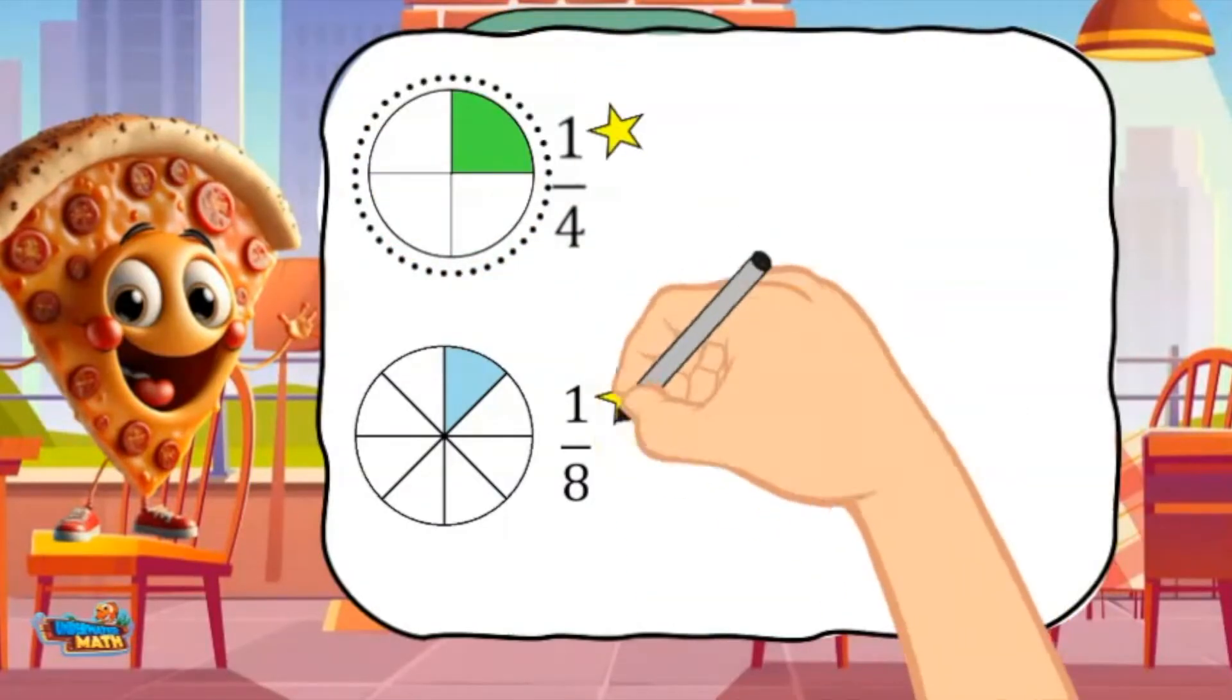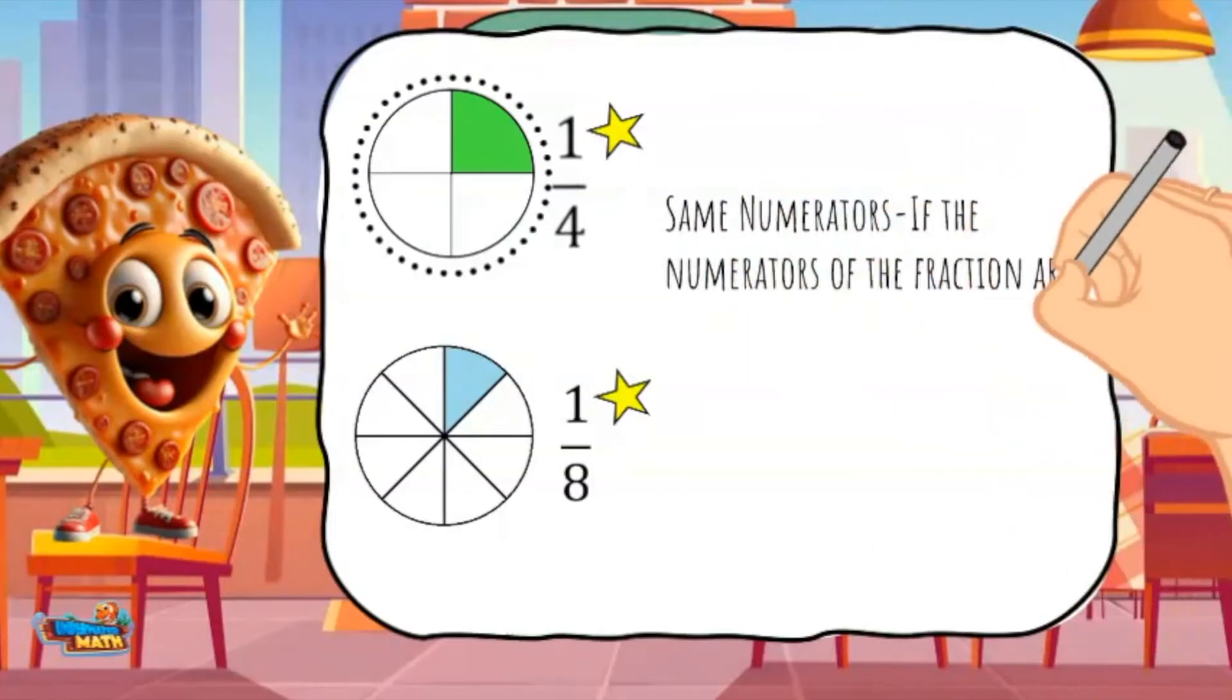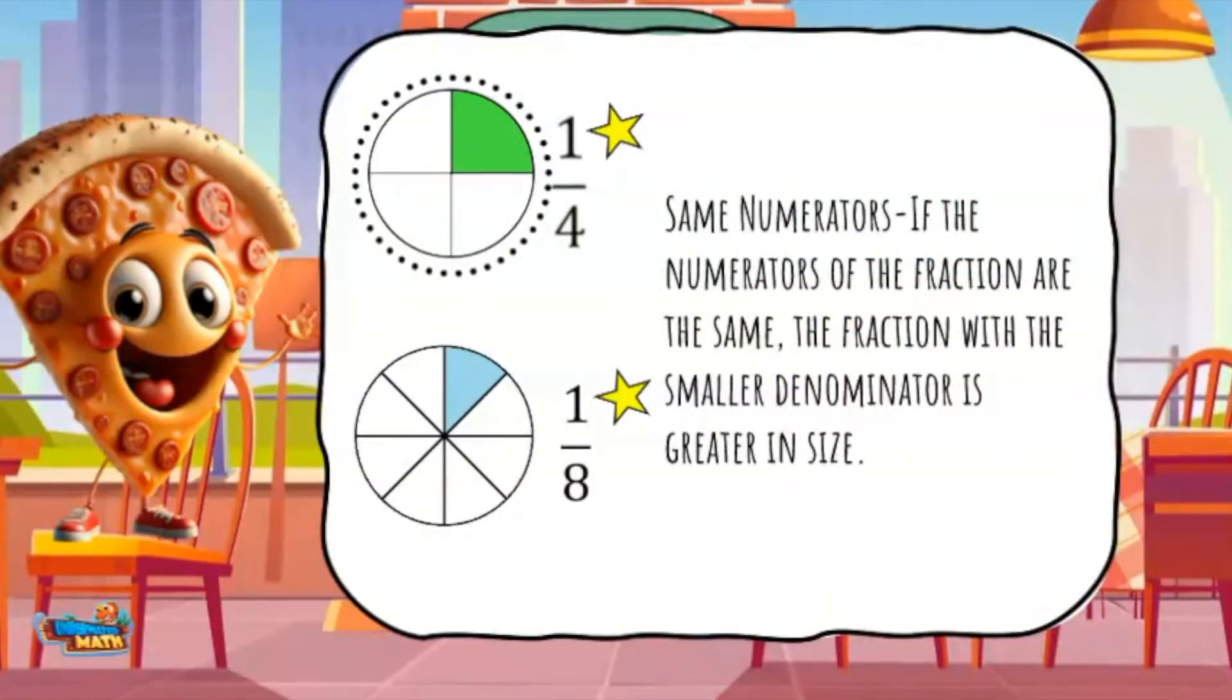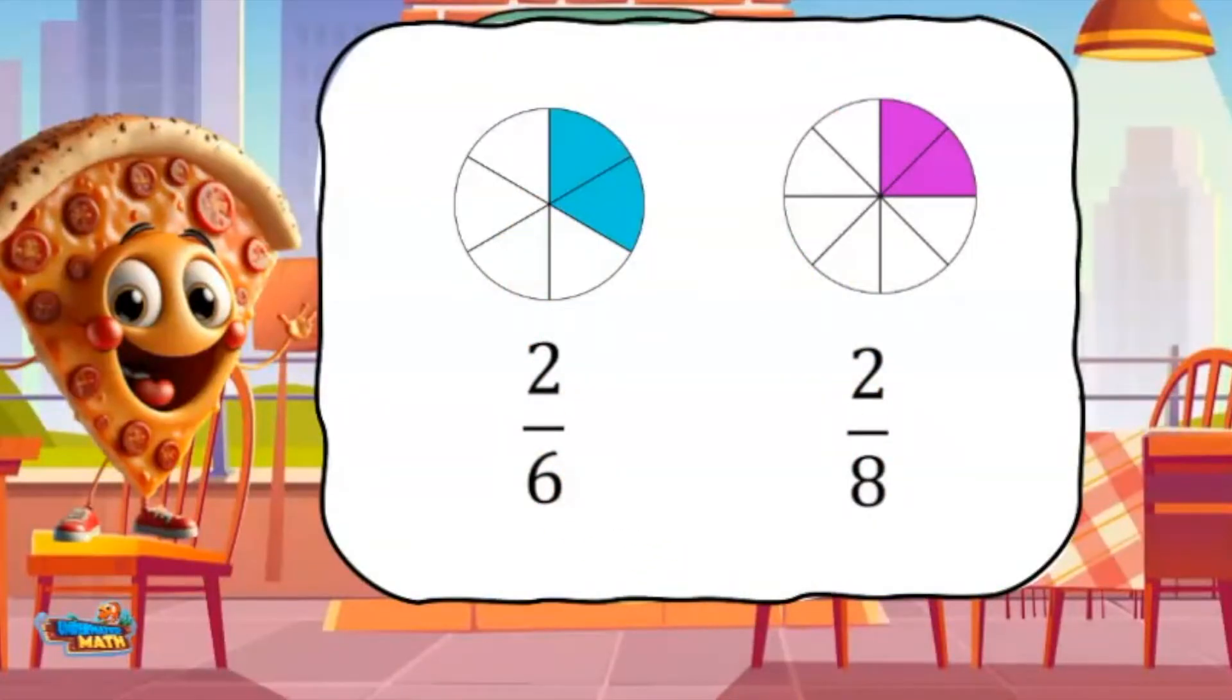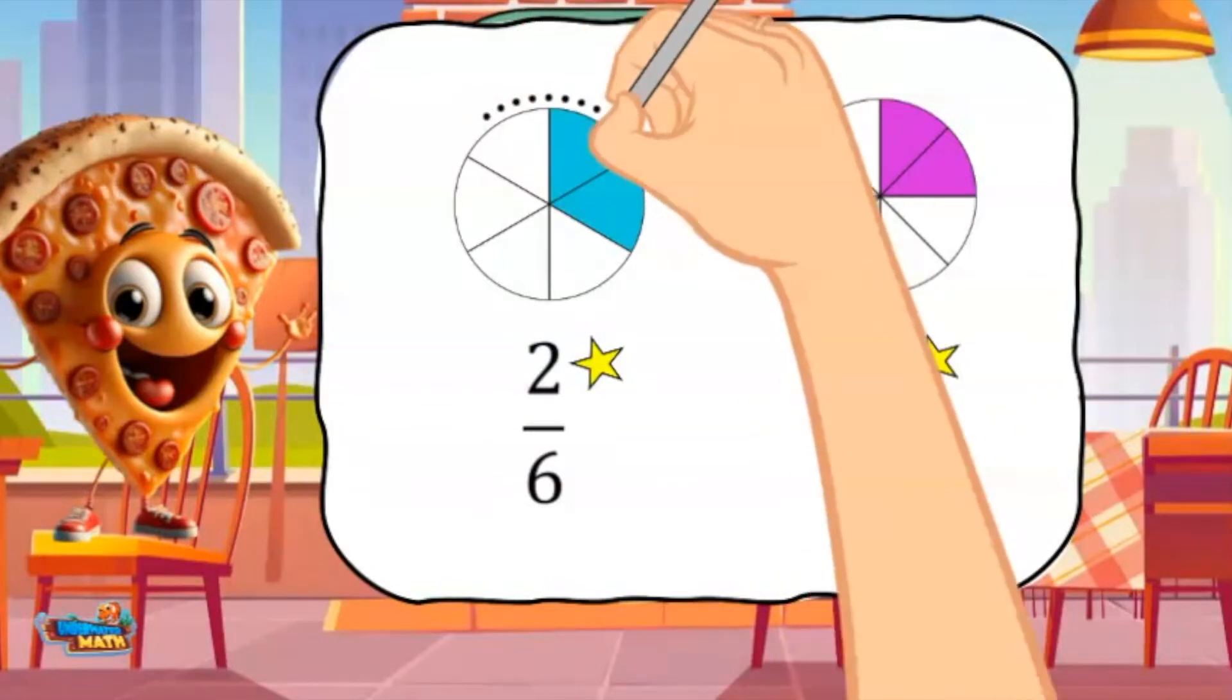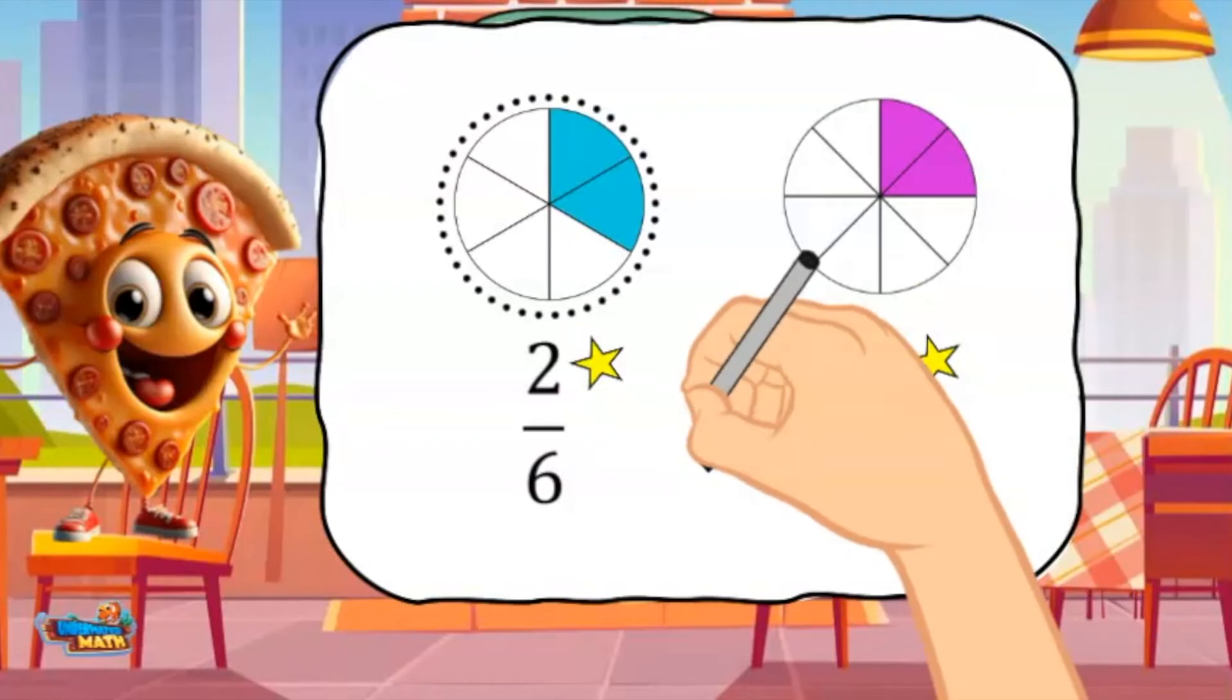When fractions have the same numerator, the fraction with the smaller denominator is greater in size. Take the fractions 2/8 and 2/6. Both fractions have a 2 as the numerator. The fraction with the smaller denominator is the larger fraction. 2/6 is larger than 2/8.